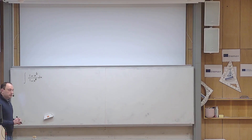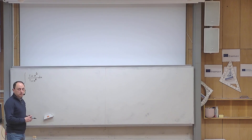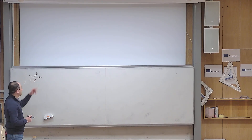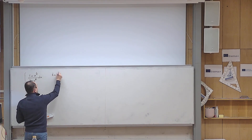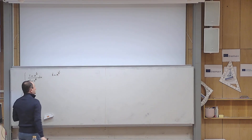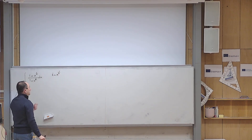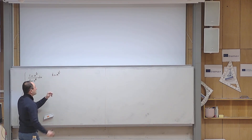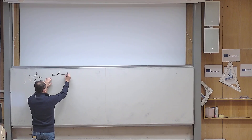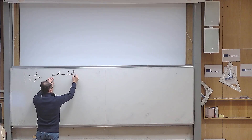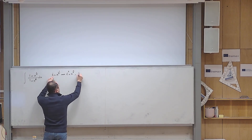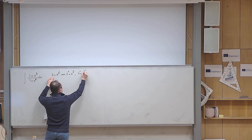The first thing that I will do is to get rid of these fraction exponents, which are not very comfortable to work with, by introducing a new variable t defined as x to the power of 1/6. If I do that, then x to the power of 1/2 can be found by raising both sides to the power of 3, so t cubed equals x to the power of 1/2. And raising to power 2, t squared equals x to the power of 1/3.